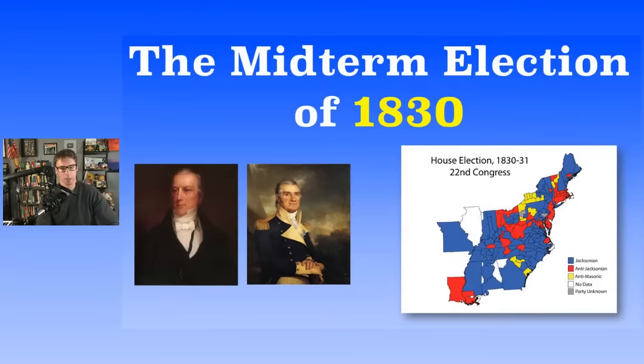Democrats were getting majorities all over the country. This is the beginning of the second party system. On the right is Samuel Smith — he was a Jacksonian and the president pro tempore. On the left is Andrew Stevenson, the Speaker of the House.